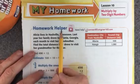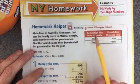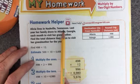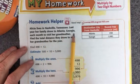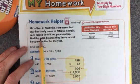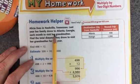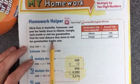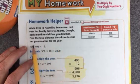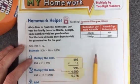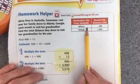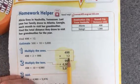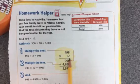On our homework helper, it reminds us of how to do the strategy, so let's take a look. Alicia lives in Nashville, Tennessee. Last year her family drove to Atlanta, Georgia each month to visit her grandmother. Find the total distance they drove to visit her grandmother for the year. So they went 498 miles and we're going to times it by 12 since they went each month.